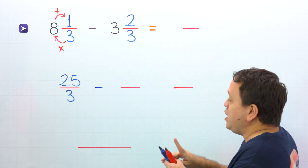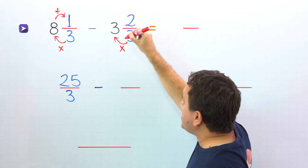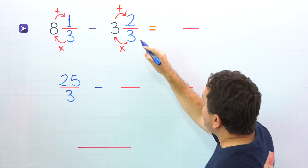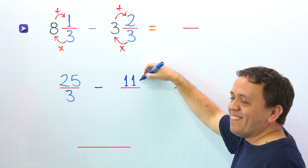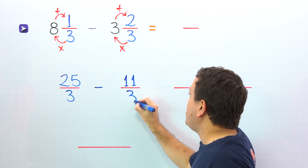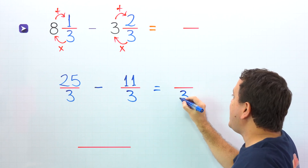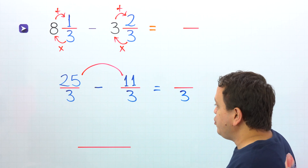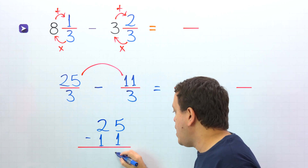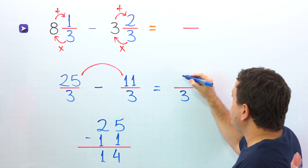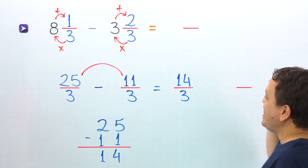Then we have the minus sign, and here we need to convert the second mixed number to an improper fraction. We multiply the denominator by the whole number and then add this result to the numerator: 3 times 3 is 9, plus 2 gives us 11. Then we keep the denominator the same — 3 comes over here. Now we need to subtract these two fractions with like denominators. 3 on the left, 3 on the right, 3 on this side. Then we subtract the numerators: 25 minus 11. 5 minus 1 gives us 4 and 2 minus 1 is 1, so the answer is 14. Fourteen-thirds is also an improper fraction, given that the numerator 14 is greater than the denominator 3.